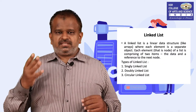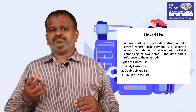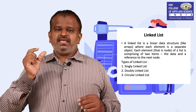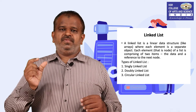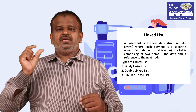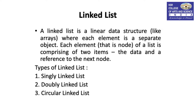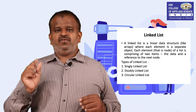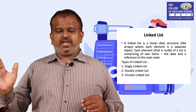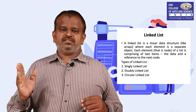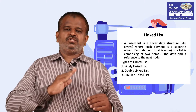The next linear data structure available is linked list. In a linked list, each and every element is individual and we call it as a node. Generally, a node consists of two parts: one is for storing data and the other is for storing the reference of the next node.